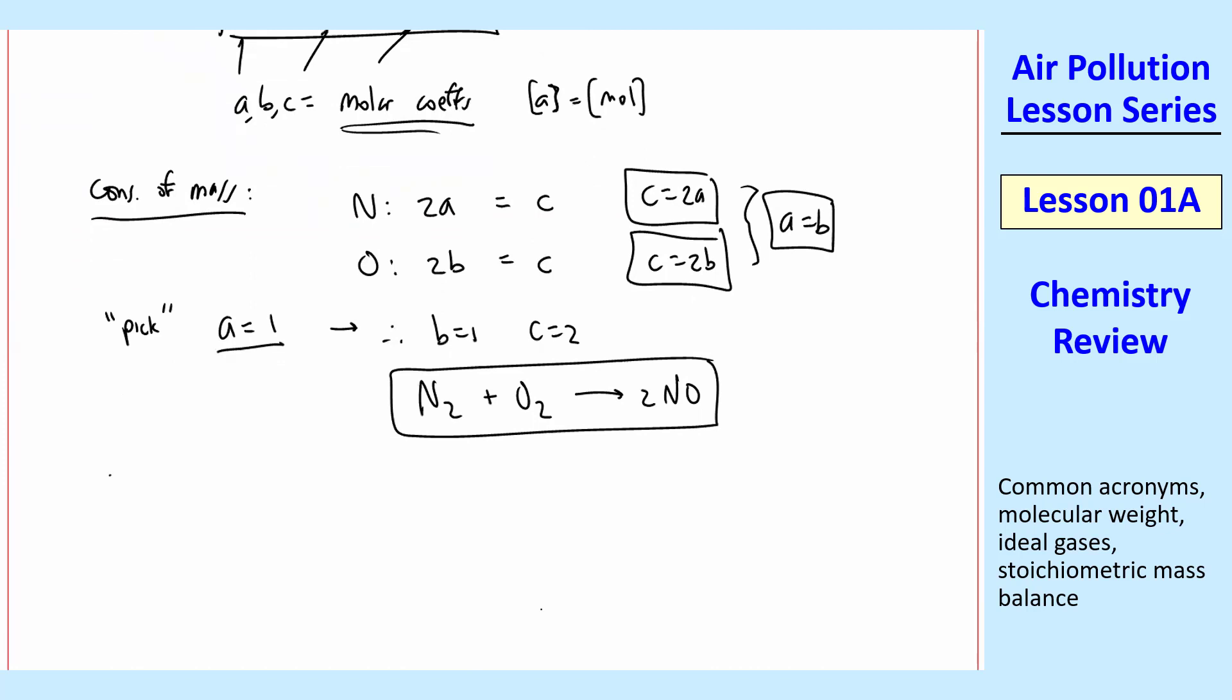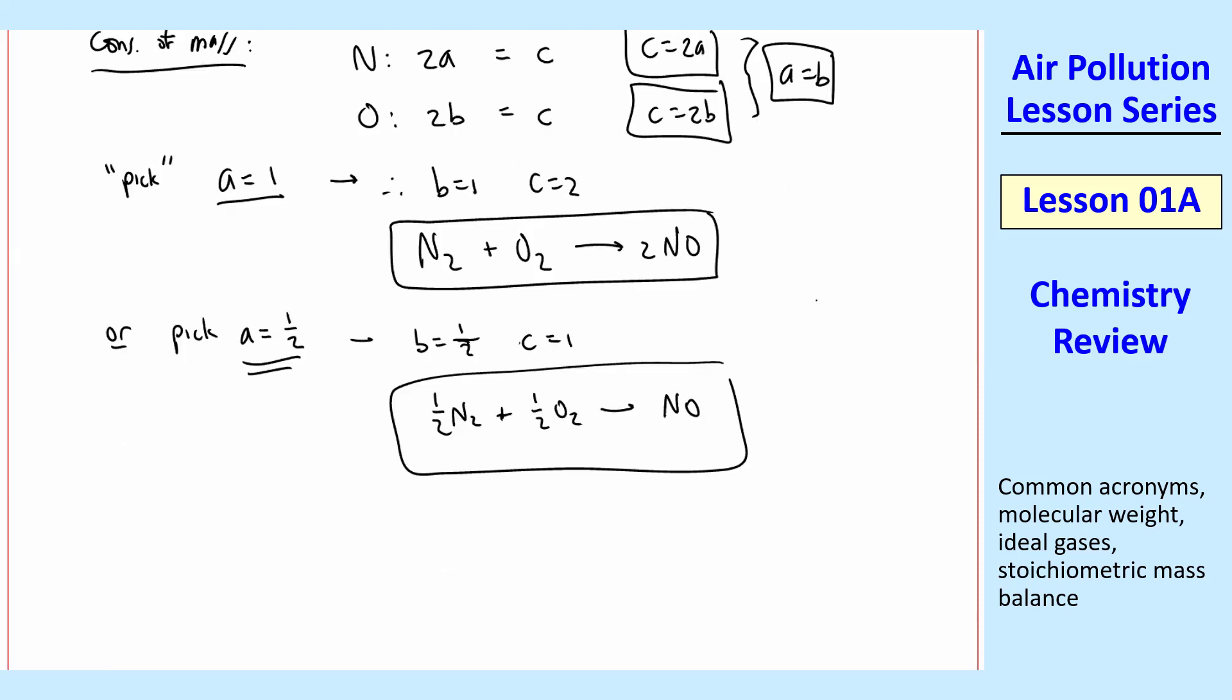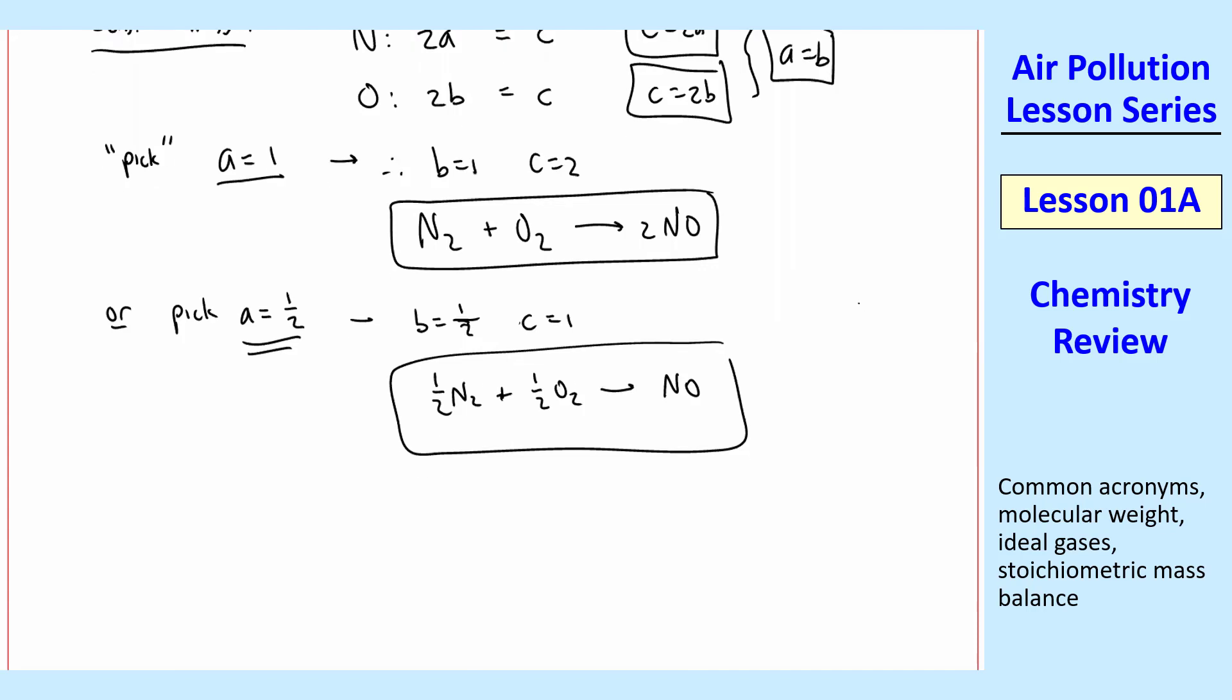You could do that in your head since this is such a simple equation. But I just want to point out that you could pick a different A. And A doesn't have to be an integer. None of these molar coefficients have to be integers. So with that, we'd have B equal 1 half and C equal 1. So our equation would be 1 half N2 plus 1 half O2 yields NO. And these are both correct. Pick the one that works best with whatever else you're doing.